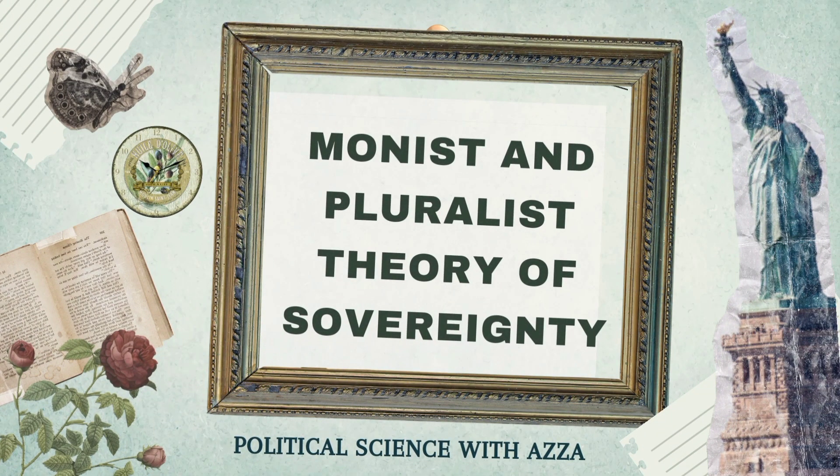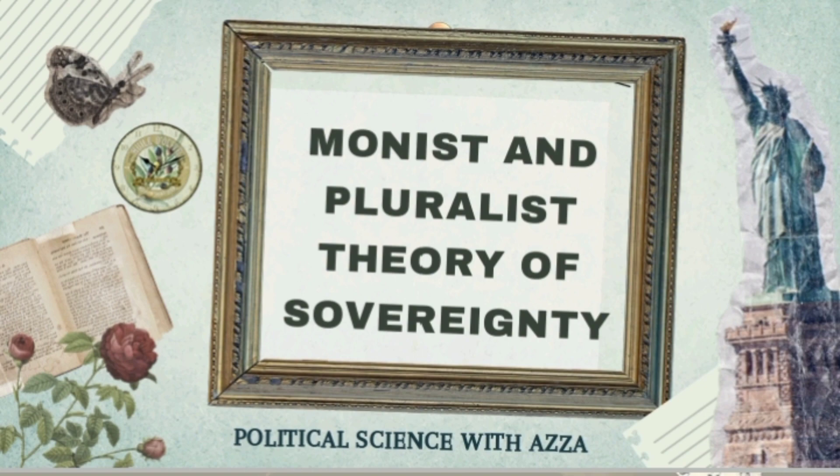Hi everyone and welcome back to my channel. In this lecture we are going to study about the monist and pluralist theory of sovereignty. This school of thought is very much associated with political science because the term sovereignty is known to be one of the elements of state, and in its absence no state can exist in its true meaning. We'll be looking into the Austinian concept of sovereignty and how it was taken by Thomas Hobbes in the form of absolutism, the pluralist attack on monist theory, and the pluralist view of sovereignty.